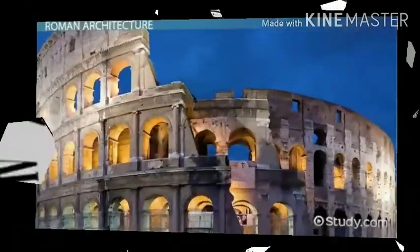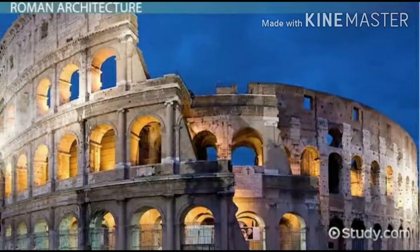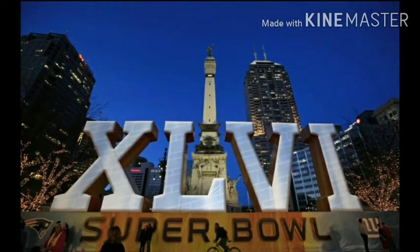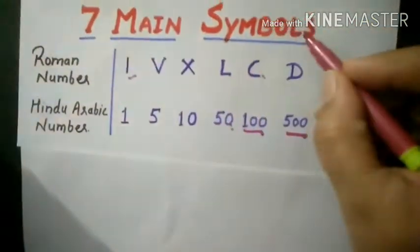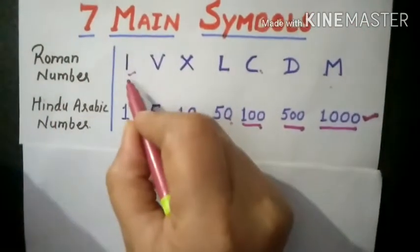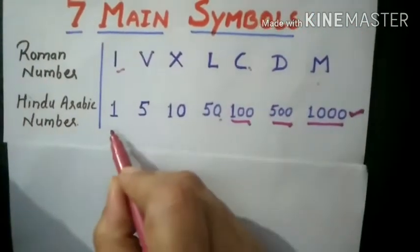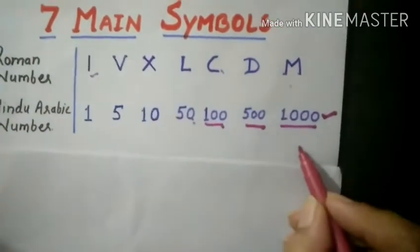Many years ago, Romans had a number system in which they used a combination of seven symbols to write a number. So, let's start with the seven symbols of Roman. Here you can see the seven main symbols of Roman numeral. These are the Roman symbols and these are the Hindu Arabic numbers.